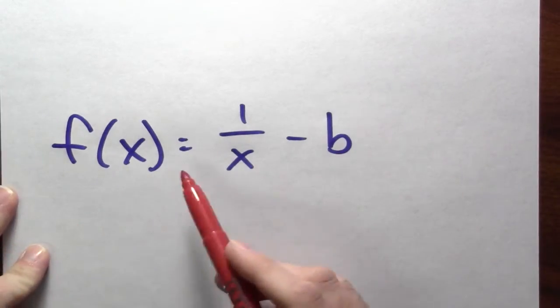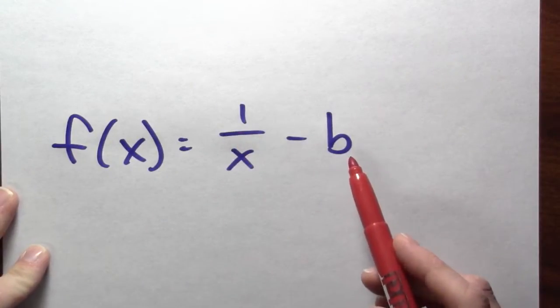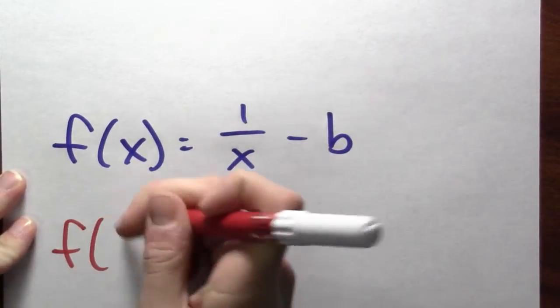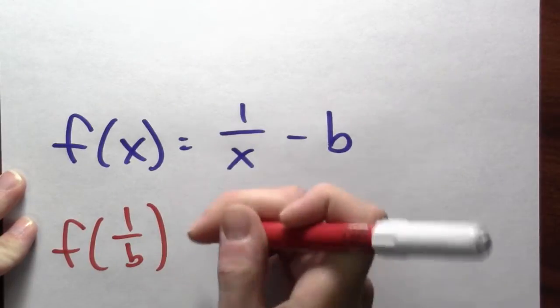There's a ton of different choices that are possible for such a function. Well, here's one choice, the function f of x equals one over x minus b. And let's just check, yeah, if I evaluate this function at one over b,